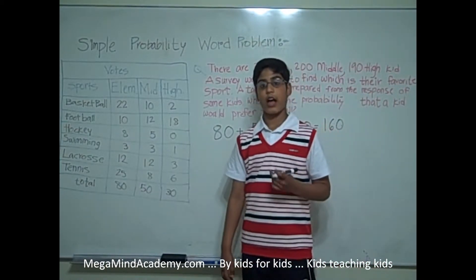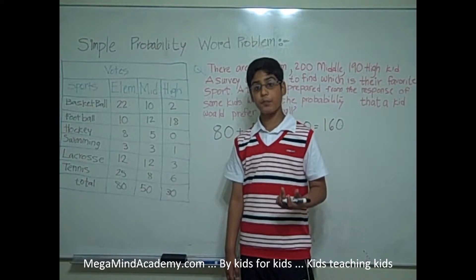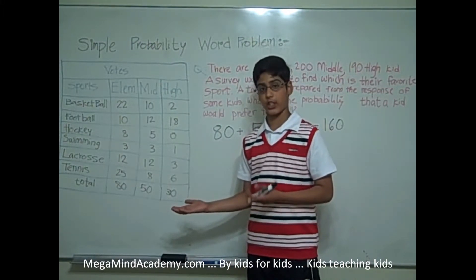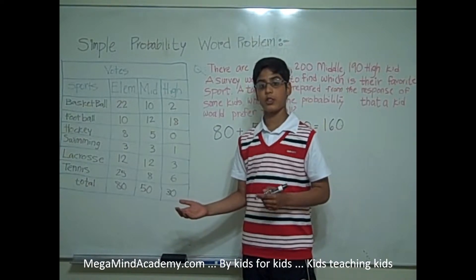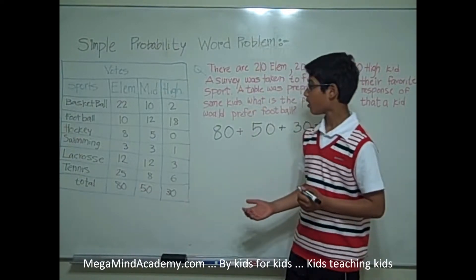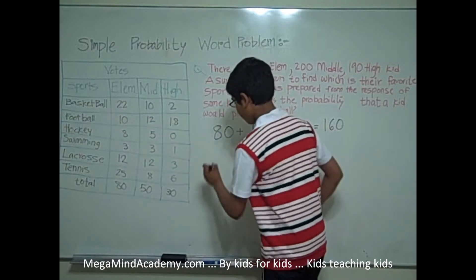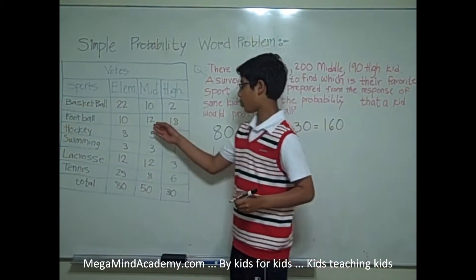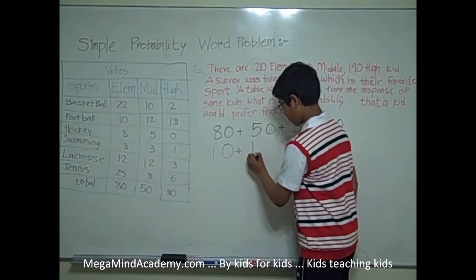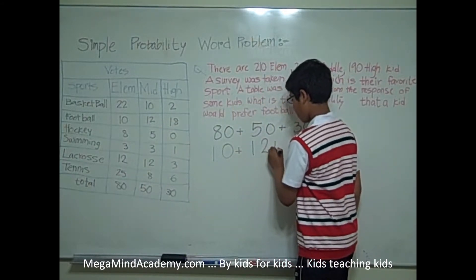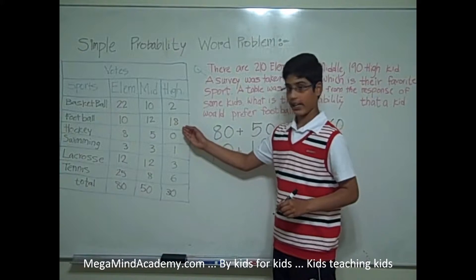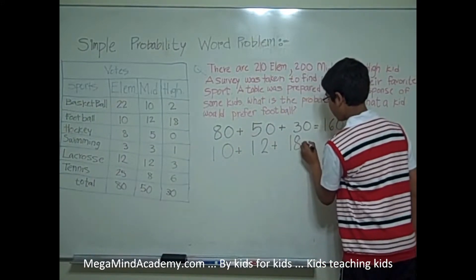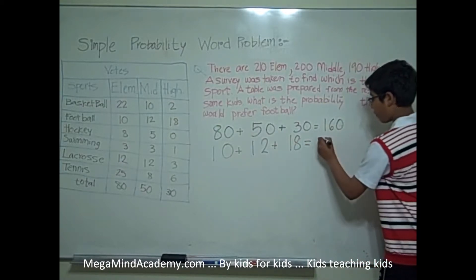Now, let's find out how many people chose football from the people who were interviewed for the survey. How many people chose football as their favorite sport? We have 10 plus 12 plus 18, which is equal to 40.